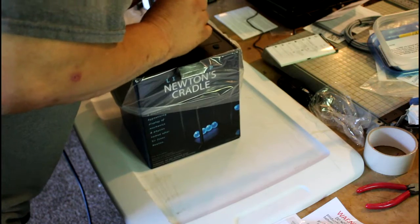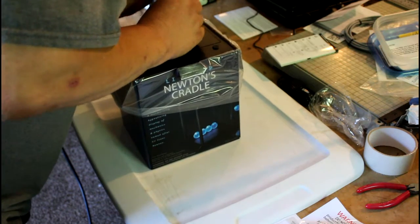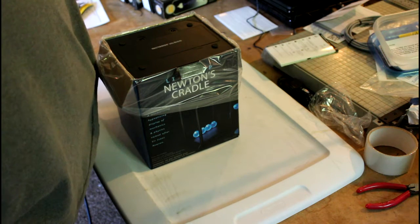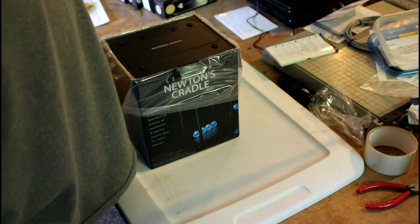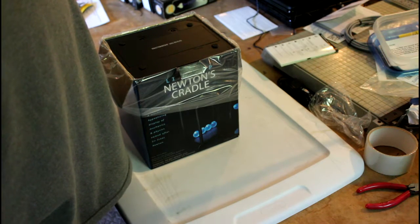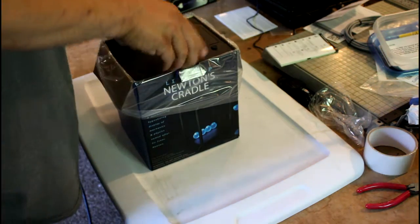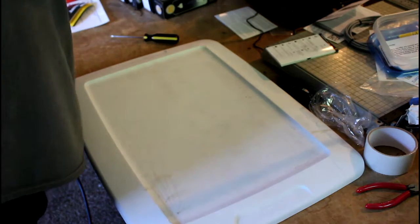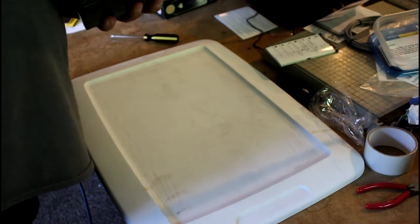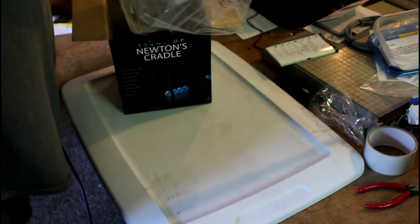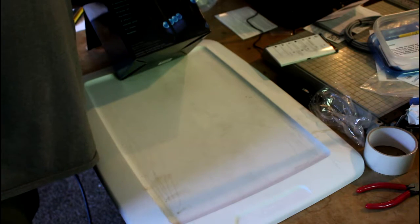Before I yank it out of the box, we read the instructions. Batteries were installed. Gently, and I mean ever so gently, remove your light up Newton Cradle from its box to display. It is fully displayed. We're going to remove it from the box. As you can see, it's turned upside down.